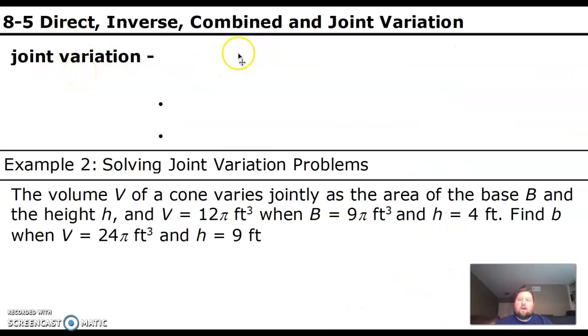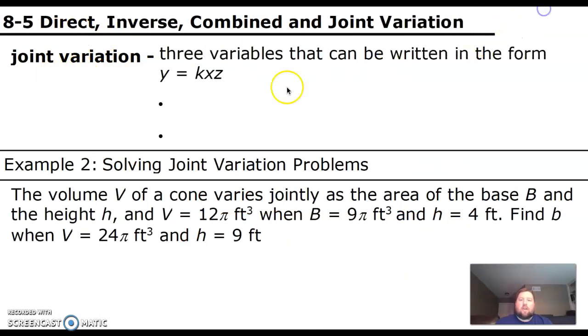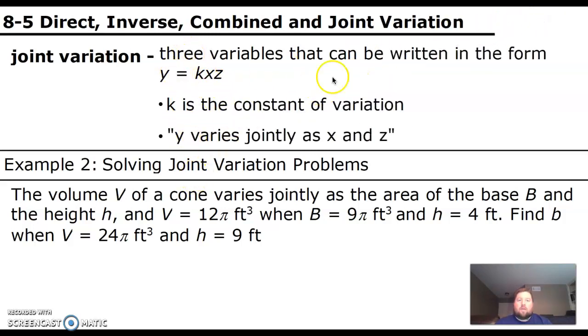Next one's joint variation. So this is a new one. It's very similar to direct variation, except there are three variables instead of just two. So a lot of this stuff is the same. But you'll see the new equation here, y equals kxz. So there's the third variable there. But they're all multiplied together. K is still the constant of variation. And you'll see instead of varies directly, it'll say varies jointly as, and then the two variables on the right side of the equation are after the word jointly. And the one on the left side of the equation is before the word jointly. That's going to come into play here because we are going to be switching the letters from x, y, and z into different ones.